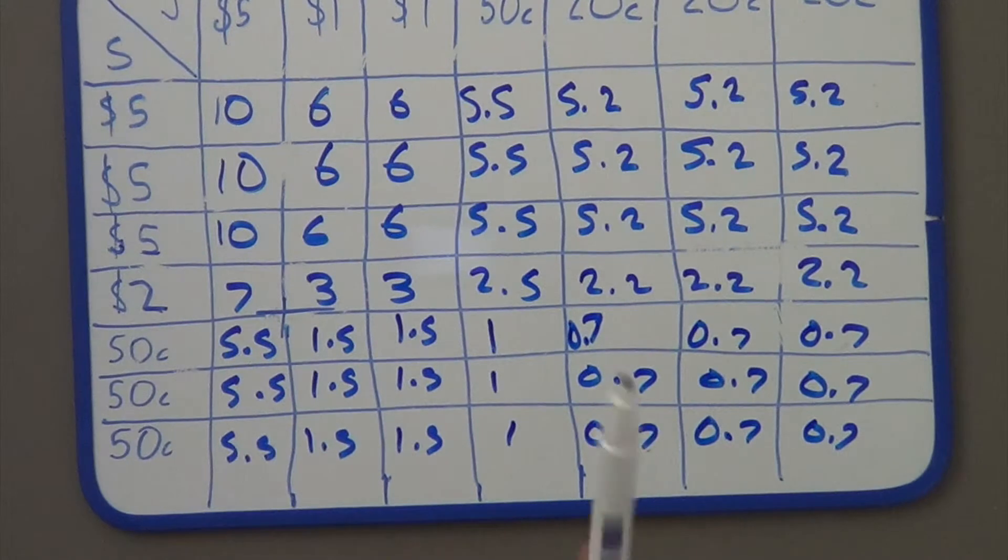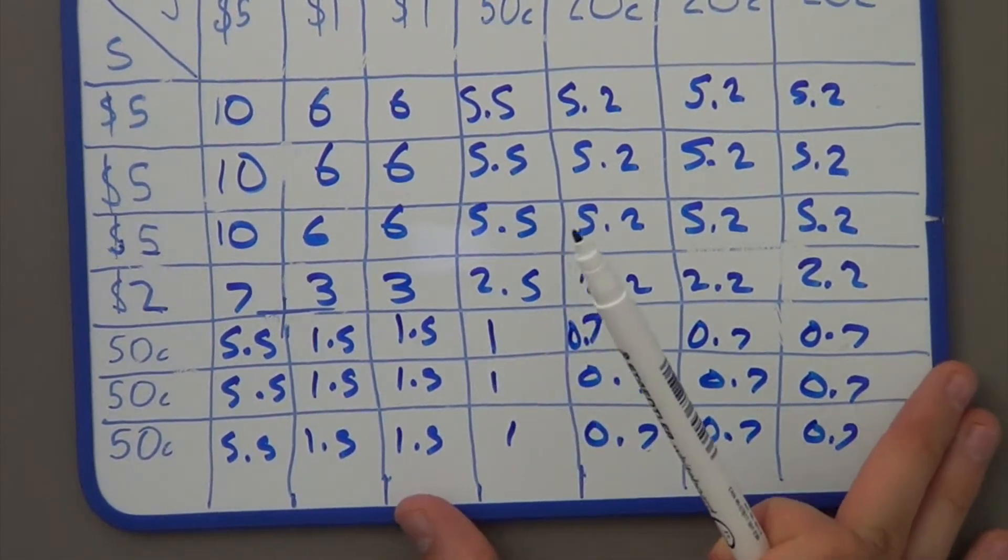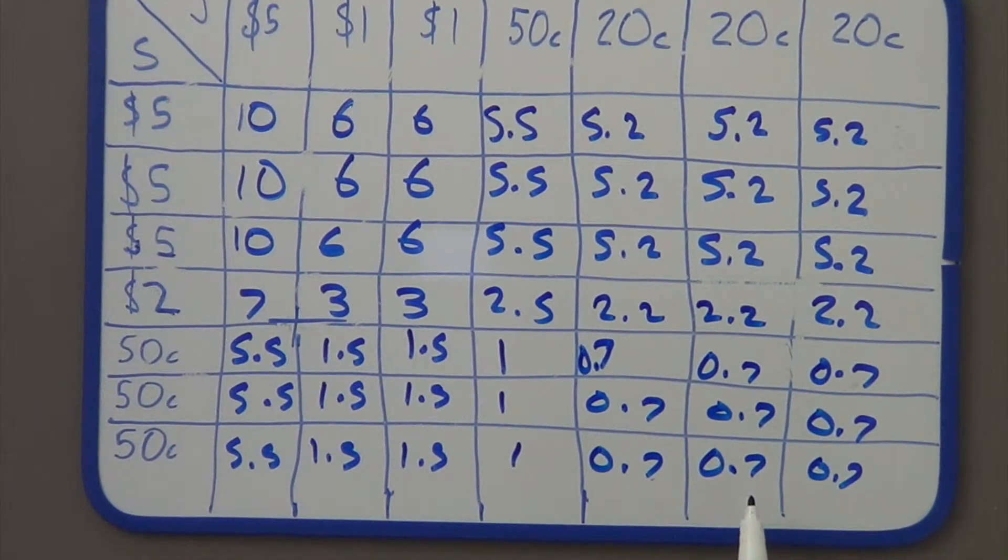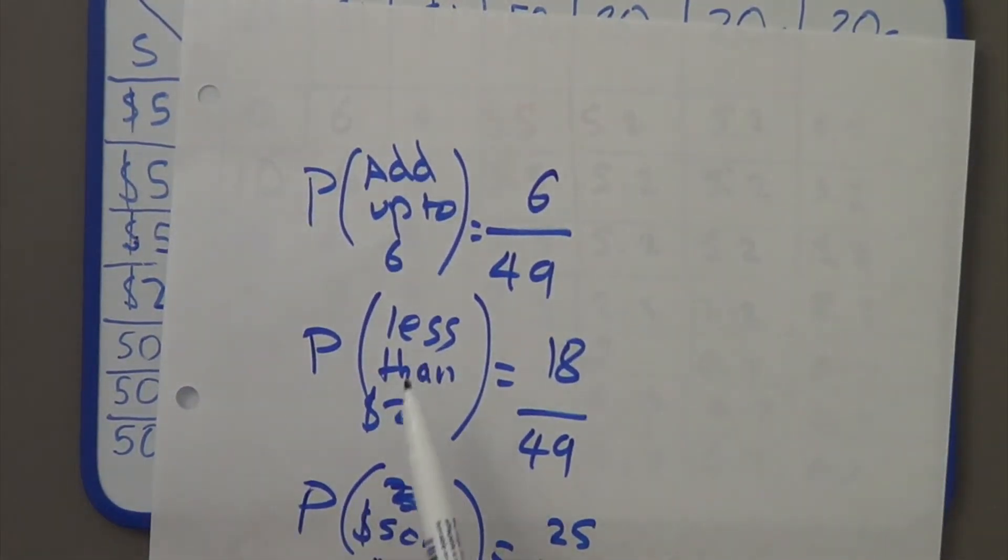Next question, what is the probability that the coins will add up to less than 2? Okay, so, they add up to less than 2. Well, 1, 2, 3, 4, 5, 6, 7, 8, 9, 10, 11, 12, 13, 14, 15, 16, 17, 18. Those are the only ones that I can see add up to less than 2. So, again, the probability that the less than 2 dollars is going to be 18 out of 49.